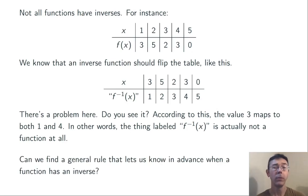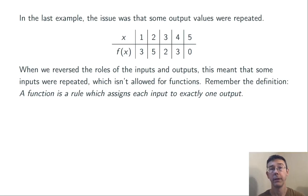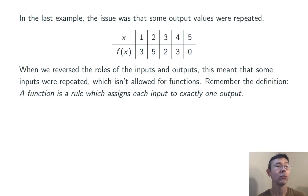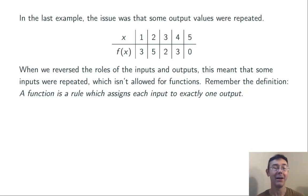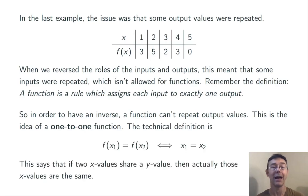We'd like to have a general rule that lets us know in advance when a function has an inverse. Looking back at that last example, the problem was that some output values were repeated in our original function. When we flipped the inputs and outputs, an input value was repeated with two different outputs. Remember, a function assigns each input to exactly one output, so we can't have multiple outputs for the same input. Therefore, for an inverse function to exist, we can't have multiple inputs with the same output. The phrase for a function like that is one-to-one — a function that does not repeat output values.